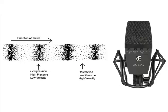In my setup these will be picked up by an SE Electronics 4400A condenser microphone, which is an input transducer. A transducer is something which converts from one form of energy to another. The microphone will convert the sound pressure variations into voltage variations, known as an audio signal.